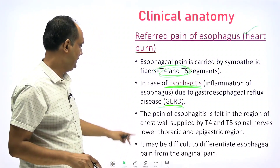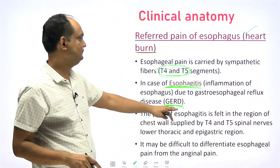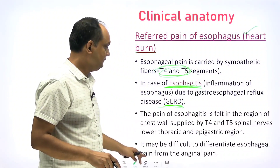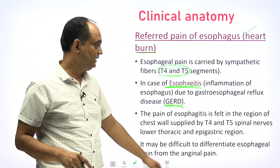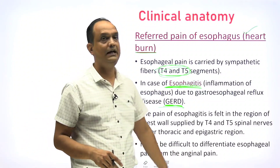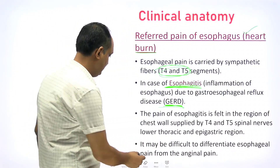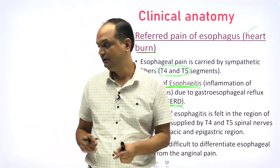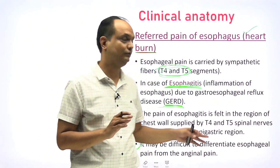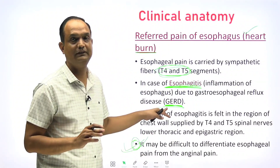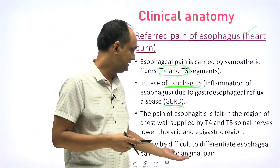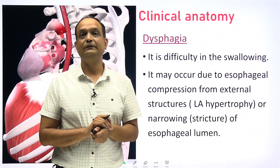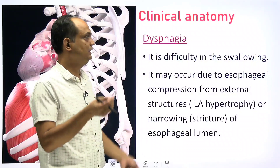The pain of the esophagus is felt in the region of the chest wall supplied by the T4 and T5 spinal levels. It may therefore be difficult to differentiate between esophageal pain and angina. There are questions about how to differentiate heartburn due to esophagitis and heartburn due to angina pectoris.